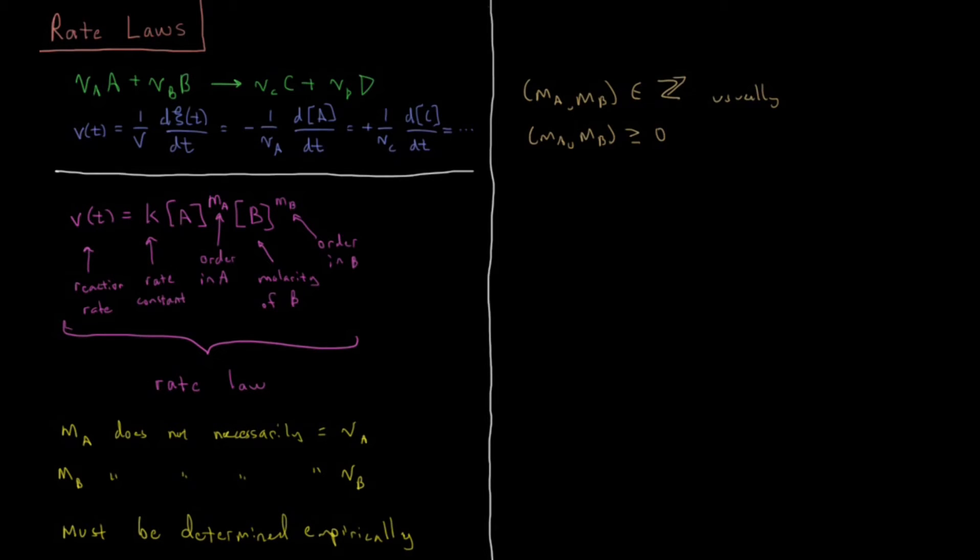Then some terminology that we would use based off of what these values of mA and mB are, what these exponents are. You might say that the reaction is mA order in A. So if mA is 0, you'd say the reaction is 0th order in A. If it's 1, you'd say the reaction is 1st order in A. If it's 2, you'd say the reaction is 2nd order in A. You'd also say that the reaction is mB order in B. That makes sense as well, it's a completely analogous statement.